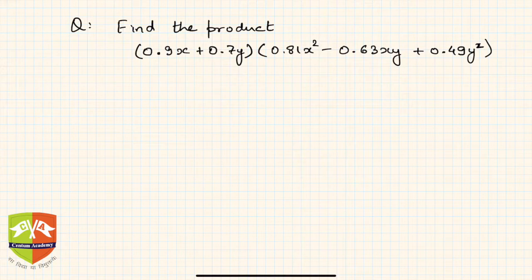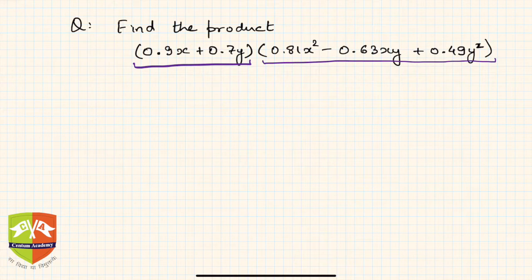Now in this question we have to find the product of two factors. This is factor number one and this is factor number two, and we have to find out the product. One obvious way is to just multiply the entire term first with the 0.9x term and then secondly with this term and open the brackets.